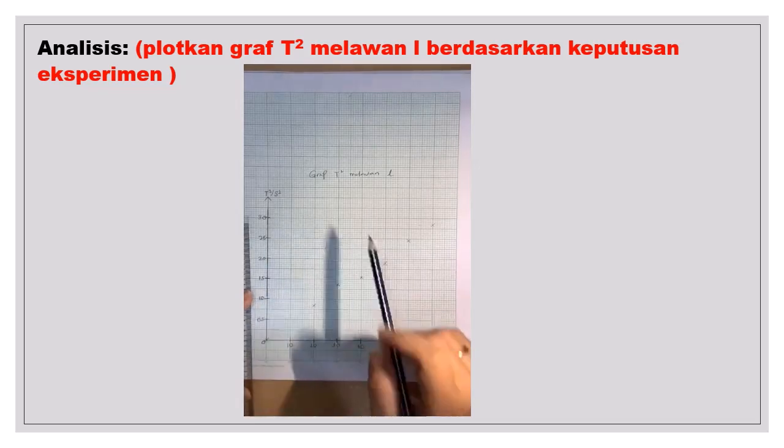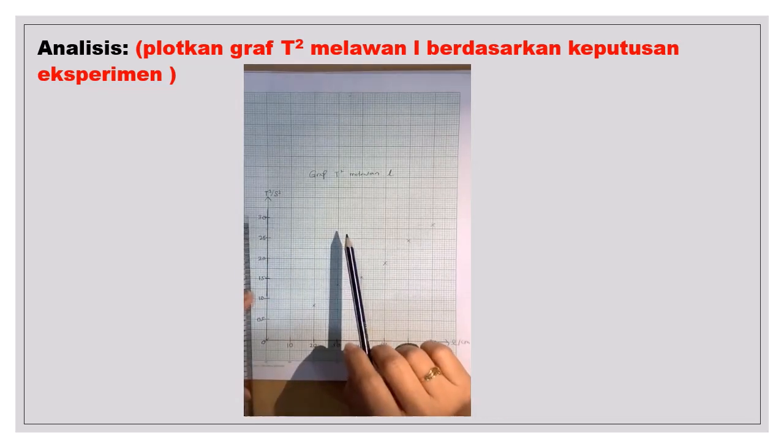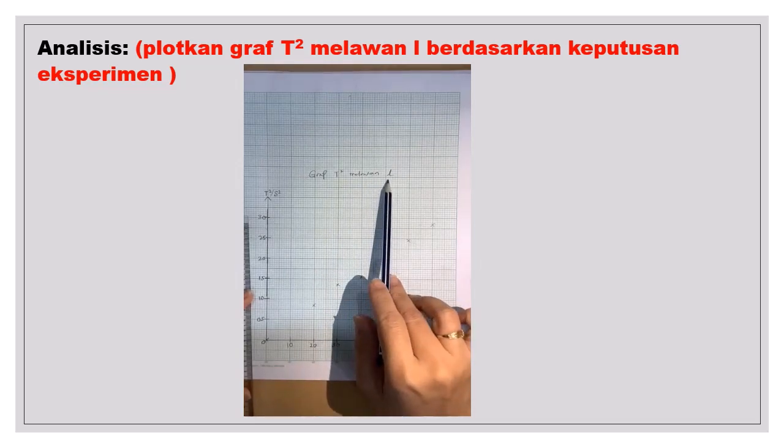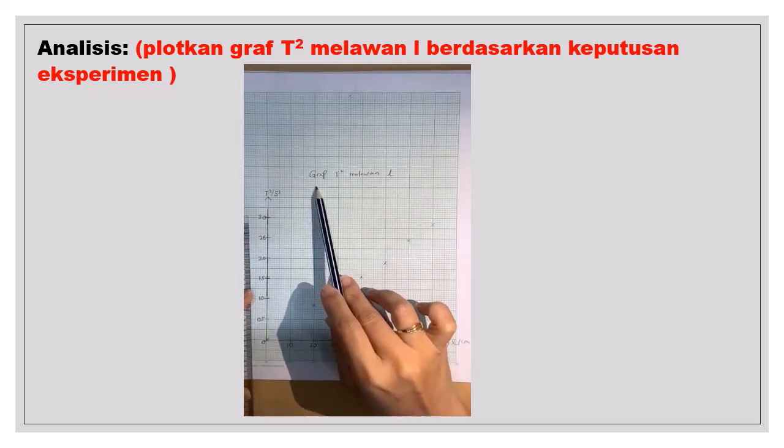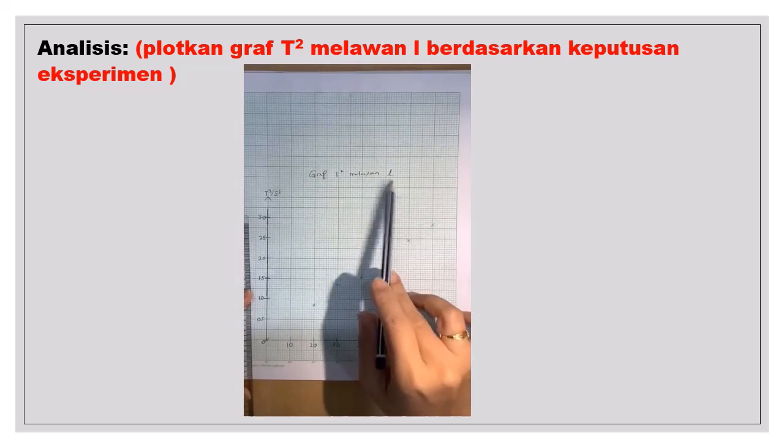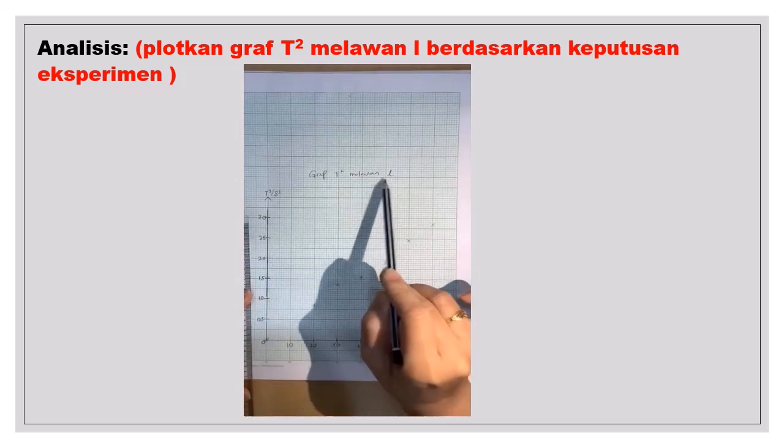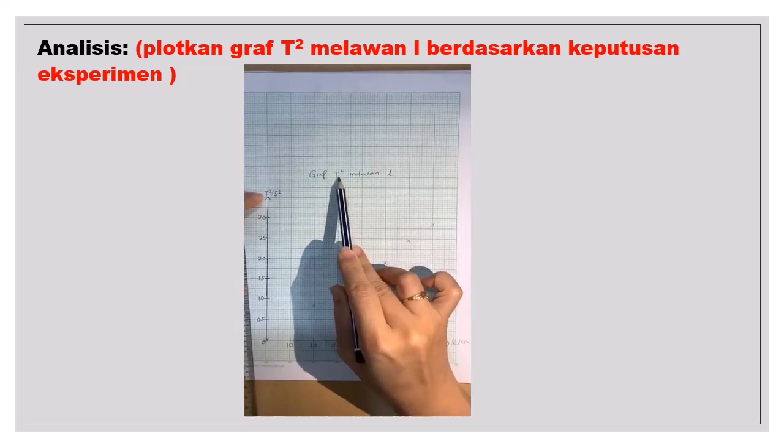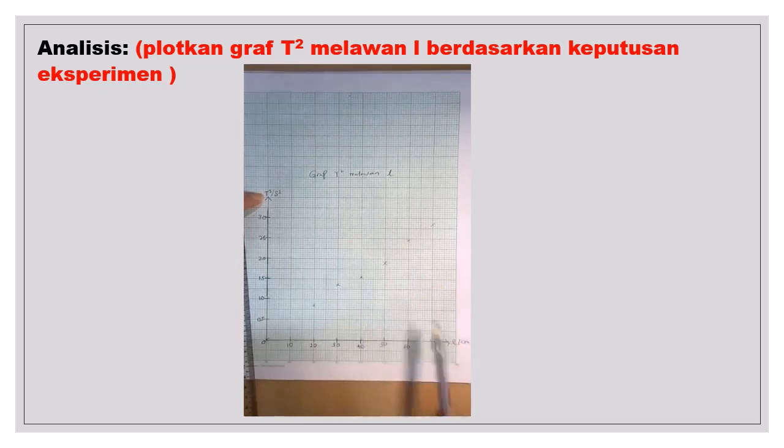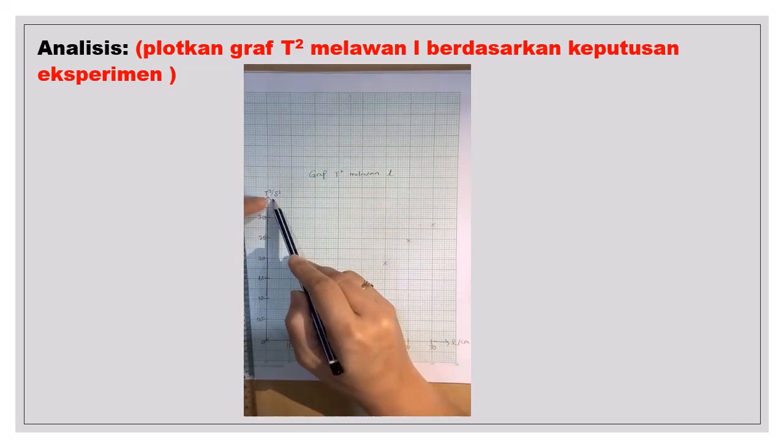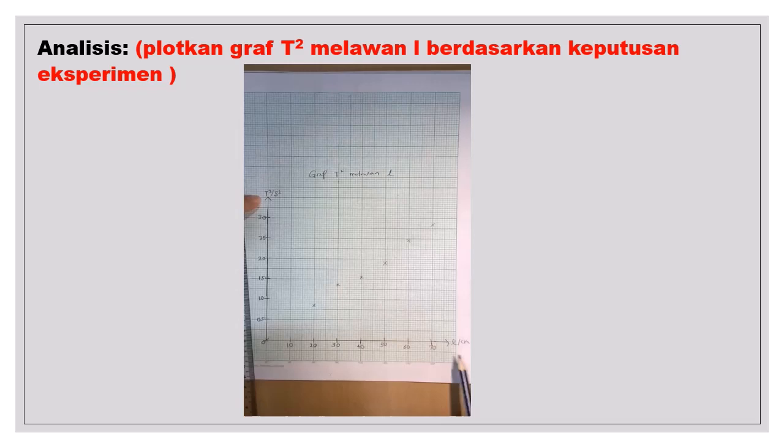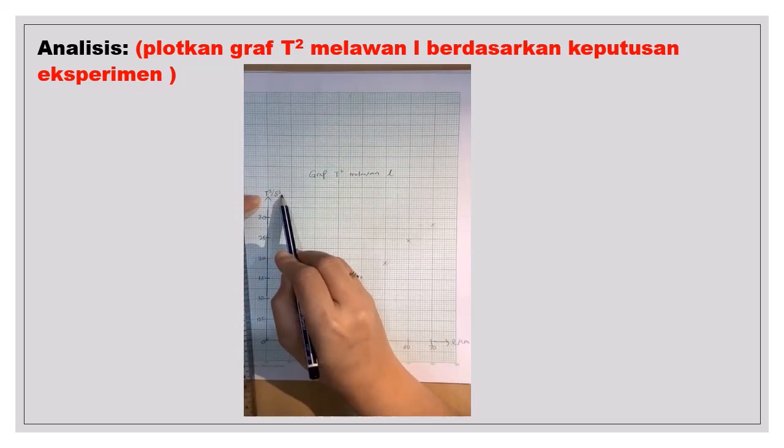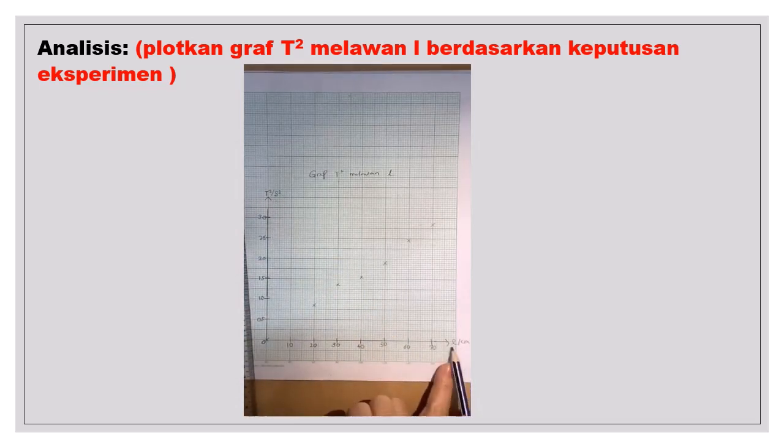Selepas anda mendapat bacaan daripada eksperimen, kemudian kamu kena plokkan graf T kuasa 2 melawan L. Tuliskan tajuk dulu. Graf T kuasa 2 melawan L. T kuasa 2 melawan L bermaksudnya, paksi Y ialah T kuasa 2. Kemudian paksi X ialah L. Kemudian ingat tuliskan unit untuk T kuasa 2 dan L. Unit untuk T kuasa 2 ialah S kuasa 2. Kemudian unit untuk L ialah cm.